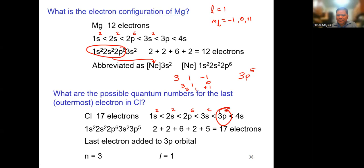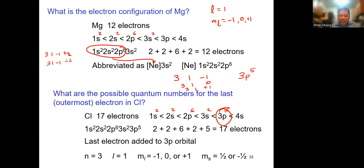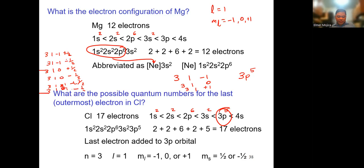So the possible quantum number sets are: (3,1,−1,+½), (3,1,−1,−½), (3,1,0,+½), (3,1,0,−½), (3,1,+1,+½), and so on. That gives six possible quantum numbers because you have three orbitals in the p subshell, each holding 2 electrons. When you look at the periodic table, which we'll discuss on Thursday, it's easier to see the s, p, d, and f blocks.